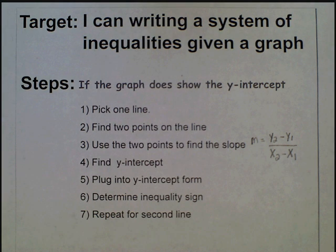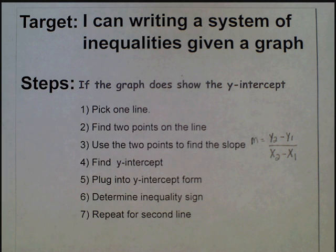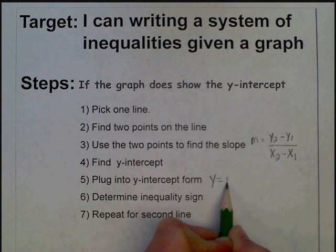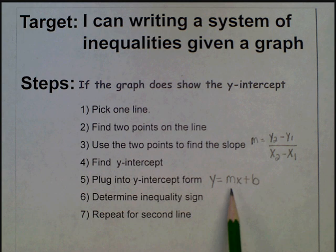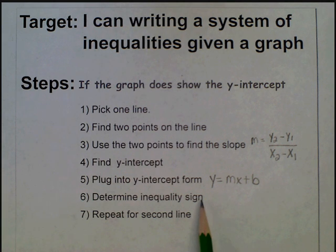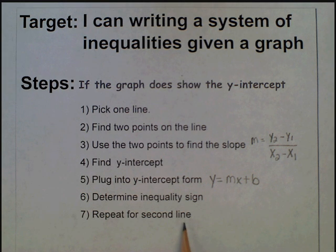After you find the slope, locate the y-intercept on your graph, then plug your slope and y-intercept into slope-intercept form: y equals mx plus b, where m is the slope and b is the y-intercept. After you have the equation, change it into an inequality by determining what inequality sign to use, then repeat these steps for the second or third line if needed.